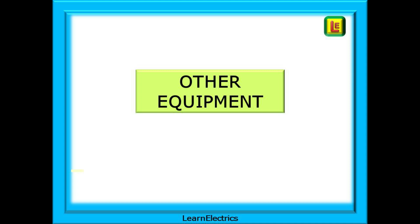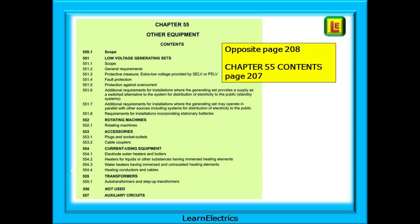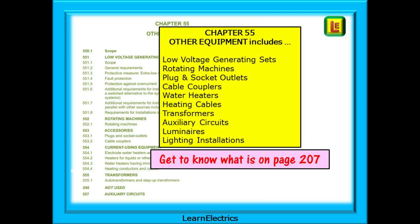Within Part 5 is a chapter about other equipment, and its importance should not be underestimated. On page 3, find chapter 55, 'Other Equipment,' which begins on page 208. Go back one page to page 207 to find the contents page for chapter 55. It's a long list of all the equipment mentioned in chapter 55 — you must get to know what is on page 207, because page 3 won't tell you. Do expect questions on this chapter.